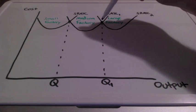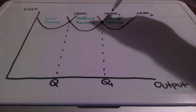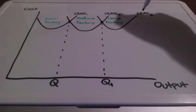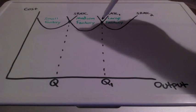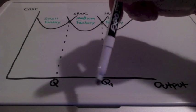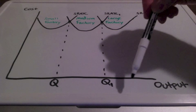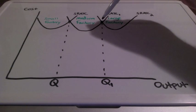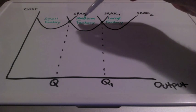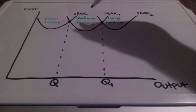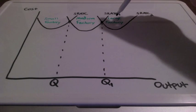Let's focus on this intersection between short-run average total cost curve 1 and short-run average total cost curve 2, which represents quantity 1. As you can see, when we moved from the small to the medium size factory, we were able to produce more output. This point is showing us that we are over-utilizing the space in the medium size factory because of the concept of scarcity. So to produce more output, we may need to move to the larger size factory, and this cycle will continue.